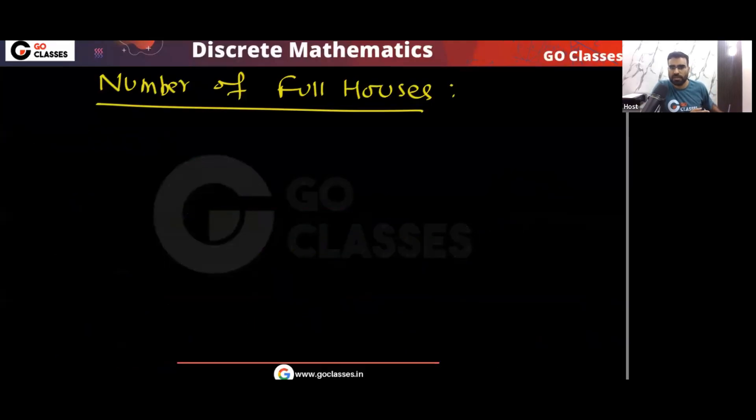I hope you understood how to count the number of full houses. You just need to visualize what you need: if you want to create a full house, you need 2 different values — one value will have 3 cards and another value will have 2 cards. That's how you solve the question.